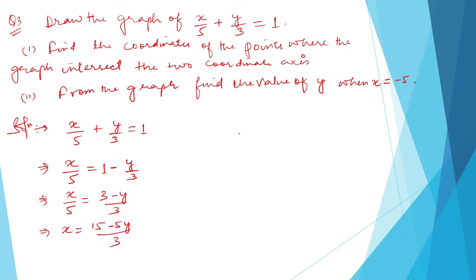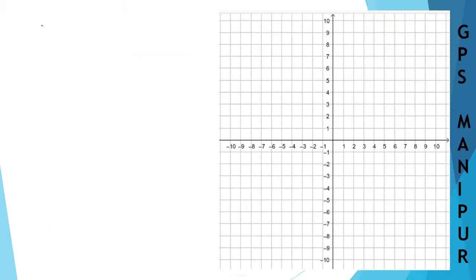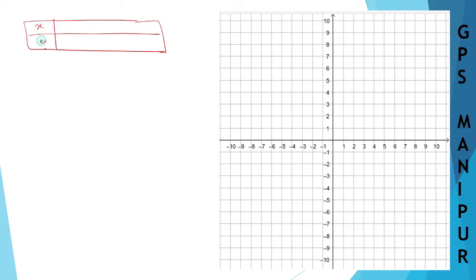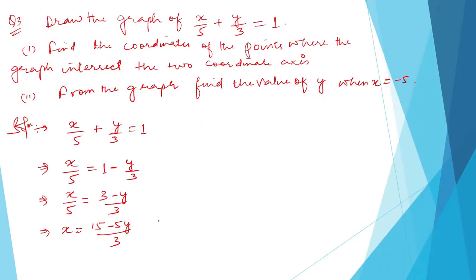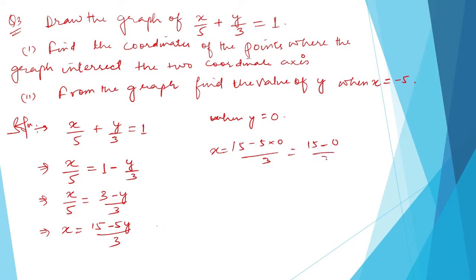Now let me draw the tabulation table. The equation is x equals (15 minus 5y) divided by 3. When y is equal to 0, x will be equal to 15 minus 5 times 0, divided by 3, which equals 15 divided by 3, which is 5.